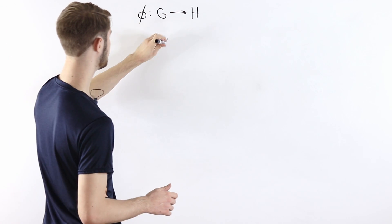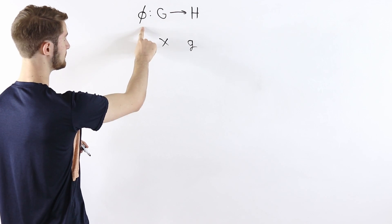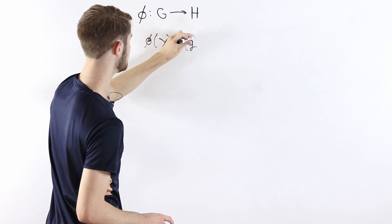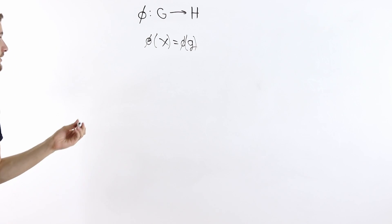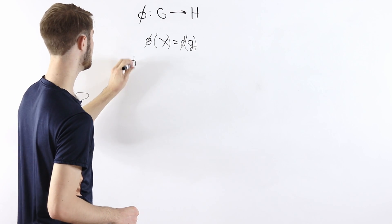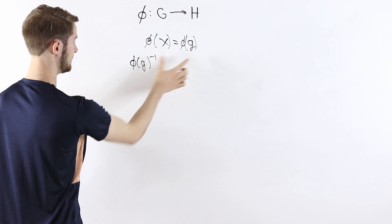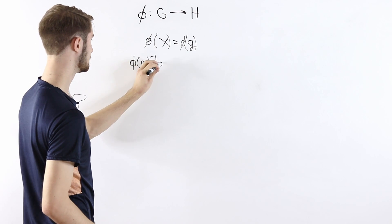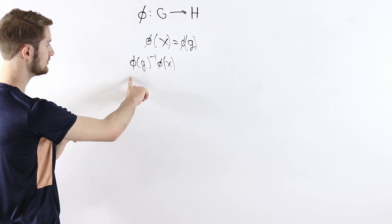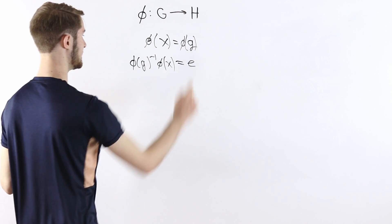Let's say that we have two elements x and g in the original group G, which is the domain of phi, and let's say that phi of x is equal to phi of g. One thing we can do is multiply both sides of this equation on the left by phi of g inverse. These are elements of the group H, so phi of g has an inverse. So we get that phi of g inverse times phi of x is equal to phi of g inverse times phi of g, which is just the identity element in the group H.